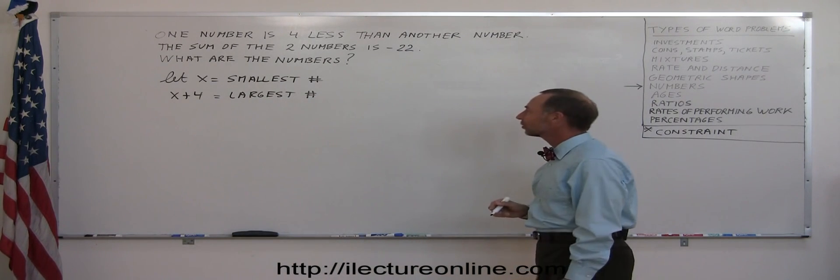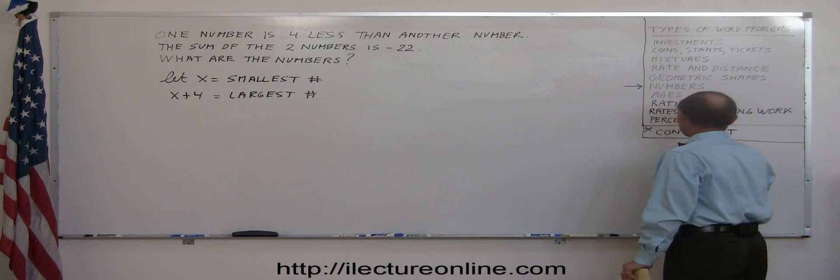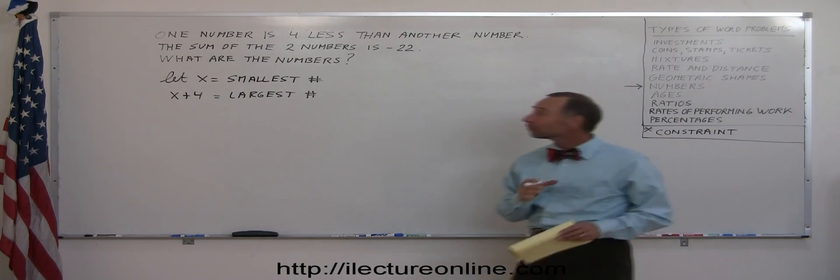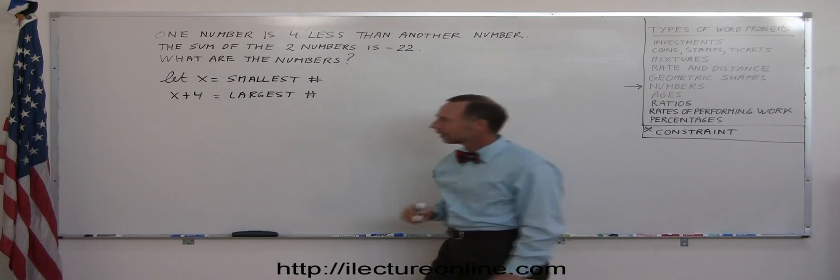All right, now we have our two numbers defined in terms of x. We now want to find a constraint, something that will help us solve the problem. And here it tells us that the sum of the two numbers is minus 22.